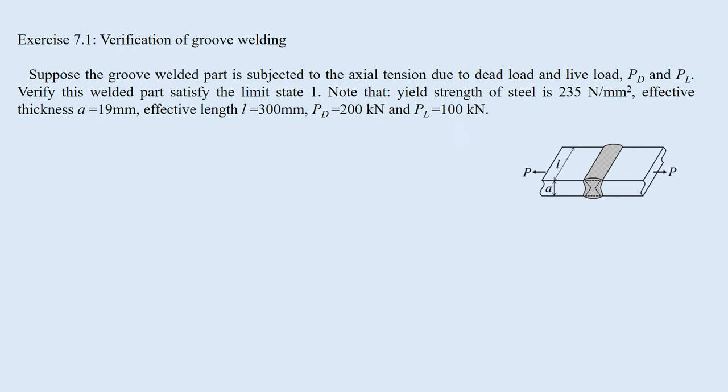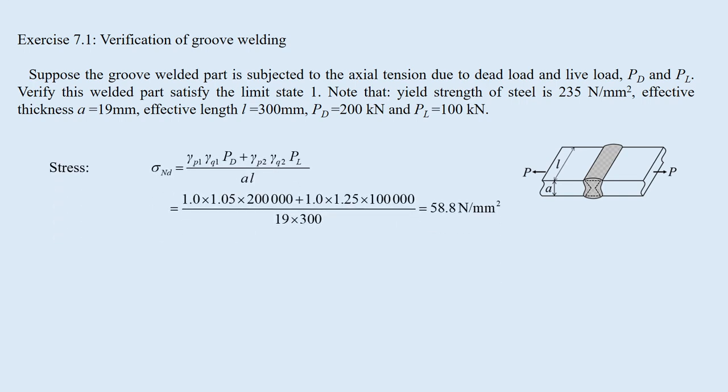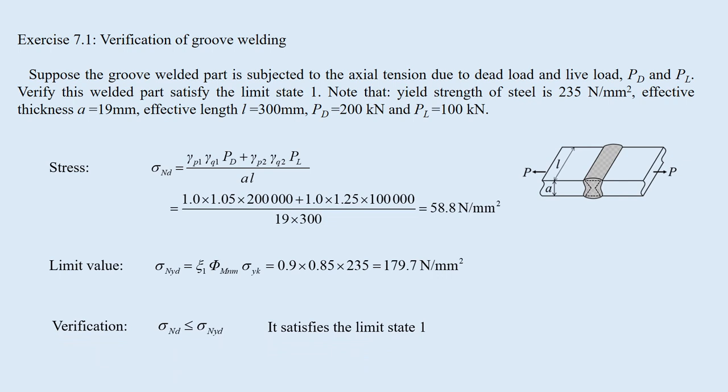Exercise 7.1: Verification of groove welding. Suppose the groove welded part is subjected to axial tension due to the dead load PD and live load PL. Verify this welded part satisfies limit state 1. Note that yield strength of steel is 235 N per square millimeter, effective thickness A = 19 mm, effective length L = 300 mm, PD = 200 kN and PL = 100 kN. The stress at the welded part is calculated, and the limit value is determined. The yield stress of the welded part is the same as that of the mother plate. The stress is within the limit value, so it satisfies limit state 1.